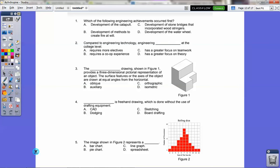Which of the following engineering achievements occurred first? Development of a catapult, development of stone bridges that incorporated wood stringers, a water wheel, or methods that can create fire at will? And the answer to this question, even though it's something we haven't discussed too much, is actually D, methods to create fire at will. Number two, compared to engineering technology, engineering blank at the college level. Does it require more electives, co-op experiences, focus on teamwork, or focus on theory? Teamwork is actually correct. That's why in a lot of the PLTW classes you take, there's a greater focus on teamwork.